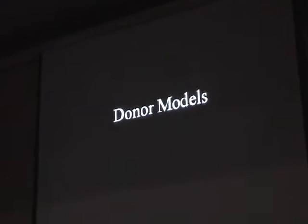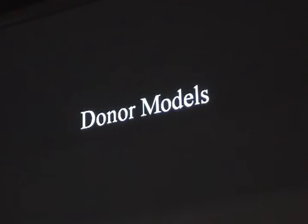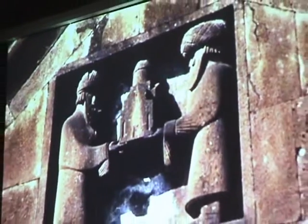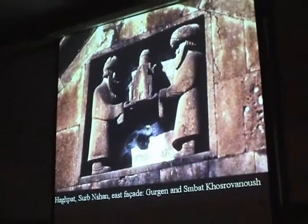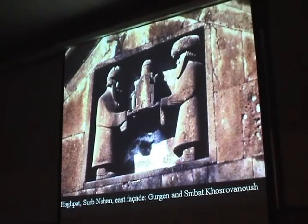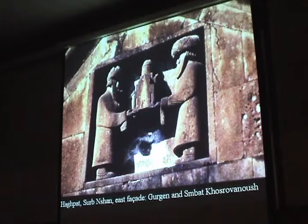Let's start with what we might consider the most easily categorized and identifiable group of models — those are the models that we find held in the hands of donors, who are giving their churches quite literally to Christ or the Virgin, usually Christ. This is the one we looked at in the general view before. It's from the Monastery of Hochpat. The main church dates to the 10th century, and here you see two princes holding the model between them — Gurgen and Tsimbat Khosrobanush — standing with the model in their hands.